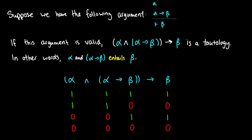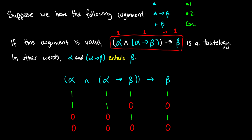Suppose we have the following argument with two premises and a conclusion. Premise one: alpha. Premise two: alpha arrow beta. Conclusion: beta. If this argument is valid, it means that if we have alpha and alpha arrow beta, we get beta. We can think of this as saying that (alpha AND alpha arrow beta) arrow beta is a tautology. If the premises are true — alpha is true and alpha arrow beta is true — then beta must be true. We should never have one arrow zero.